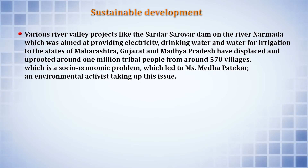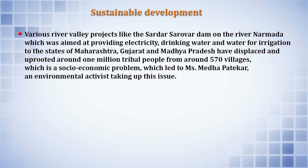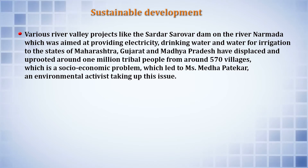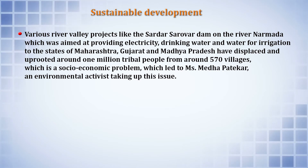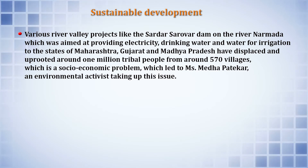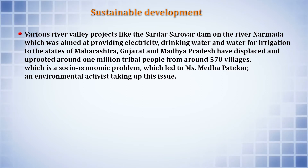Various river valley projects — like the Sardar Sarovar Dam built on the river Narmada — were aimed at providing electricity, drinking water, and irrigation to the states of Maharashtra, Gujarat, and Madhya Pradesh. However, this project displaced and uprooted more than one million tribal people from 570 villages, creating a major socio-economic problem. This led activist Ms. Medha Patkar to hold dharnas, strikes, and fasts to raise this issue — illustrating the critical importance of socio-economic aspects when dams are built.